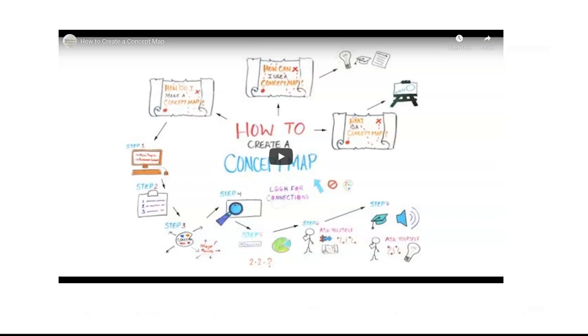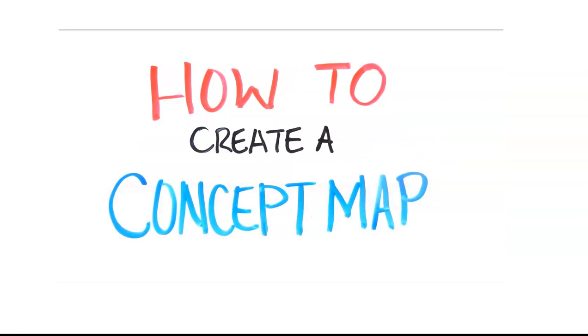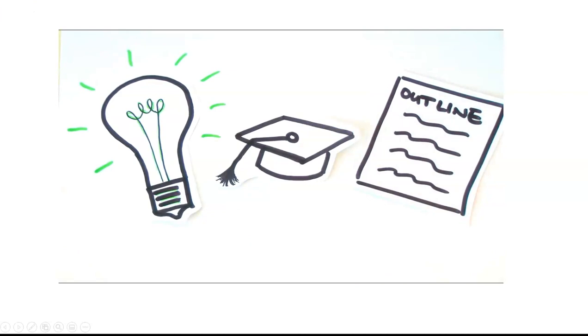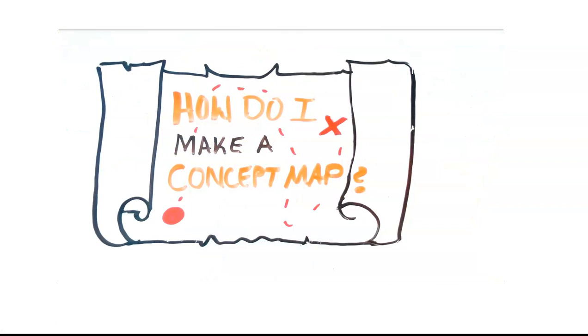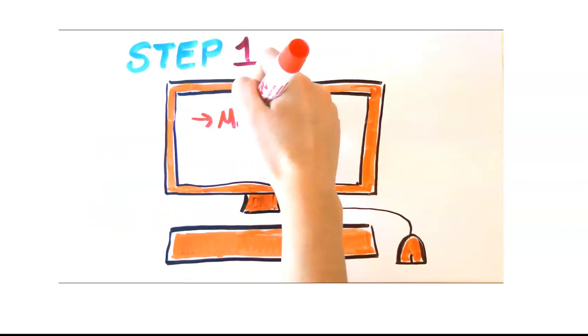A concept map is a visual way to organize thoughts and make connections between ideas. You can use a concept map to brainstorm and organize ideas, create an outline for an assignment, or test your knowledge and review for exams. Step 1: identify the main topic and brainstorm everything you know about it, using relevant content from lectures, texts, and other course material. Step 2: organize your information into main points.